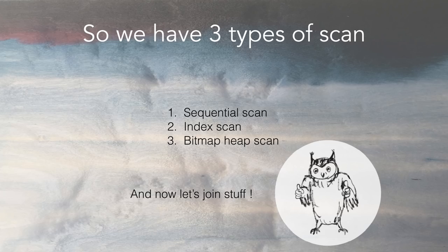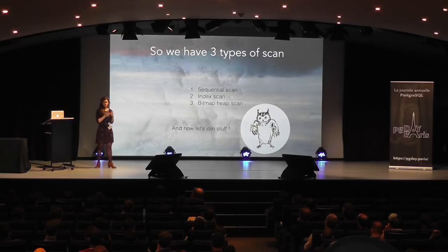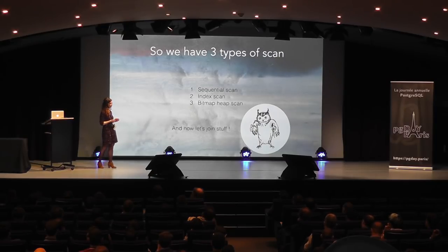So we have three types of scans: the sequential scan, the index scan, and the bitmap heap scan. Now let's talk about joining tables, which we do really often.